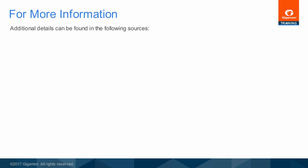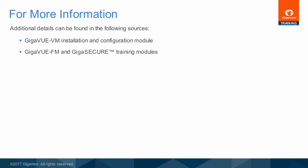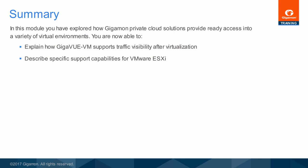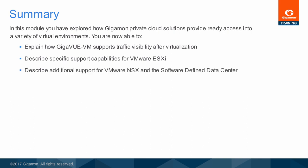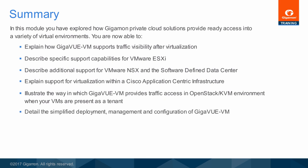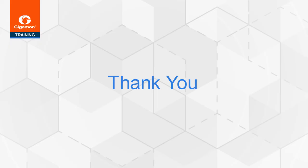Additional details about GigaView VM can be found in the GigaView VM installation and configuration module, in the training modules for Fabric Manager and GigaSecure, in the product brochures and data sheets for Fabric Manager and GigaView VM, in the GigaView FM web interface online help topics, and in the user guide. In this module, you have explored how Gigamon Private Cloud Solutions provides ready access into a variety of virtual environments. You are now able to explain how GigaView VM supports traffic visibility after virtualization, describe specific support capabilities for VMware ESXi, describe additional support for VMware NSX and the Software Defined Data Center, explain support for virtualization within a Cisco application-centric infrastructure, illustrate the way in which GigaView VM provides traffic access in an OpenStack or KVM environment when your VMs are present as a tenant, and detail the simplified deployment, management, and configuration of GigaView VM. This completes the training module describing virtual traffic access features and capabilities provided by GigaView VM.